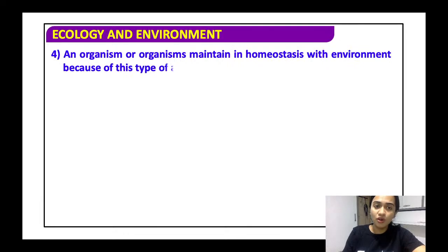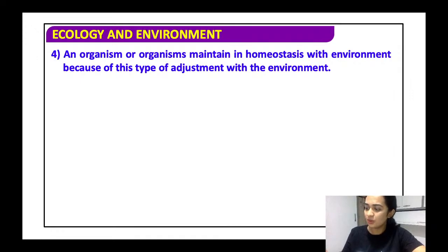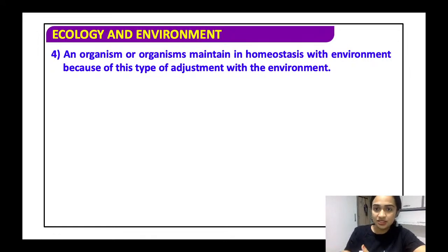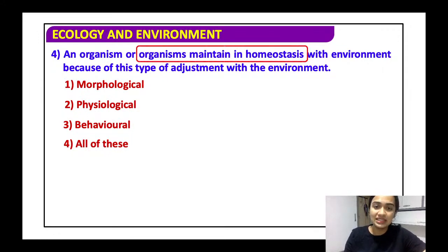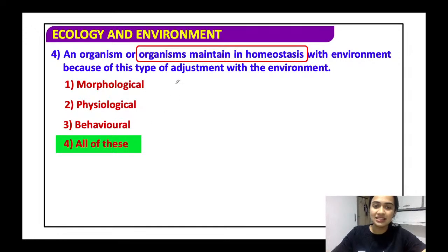An organism that maintains homeostasis with the environment does so through morphological, physiological, and behavioral adjustments — all of the above. These three are the integral points needed to get in balance with the environment.